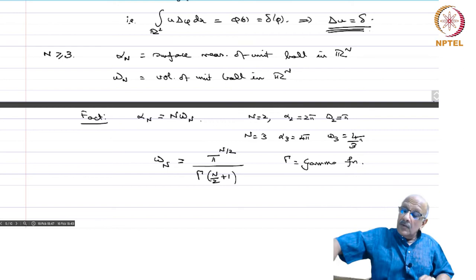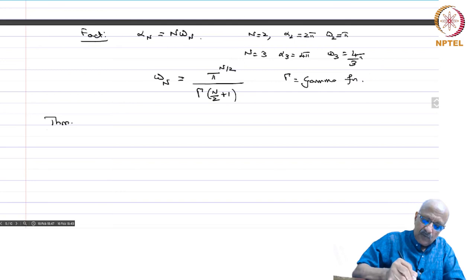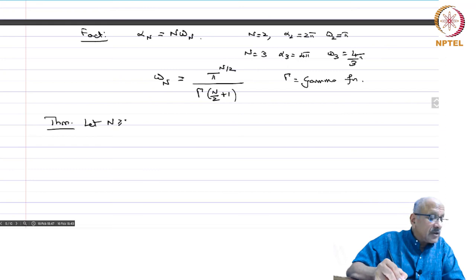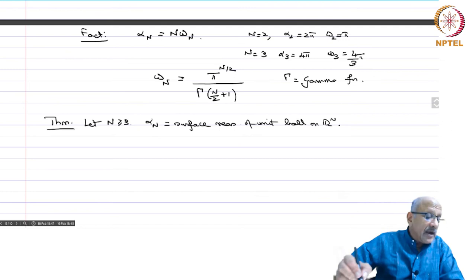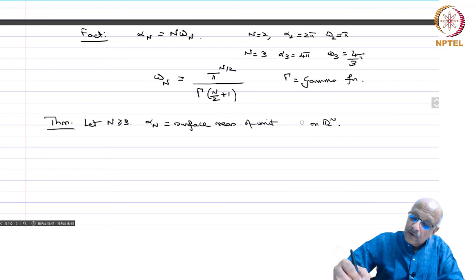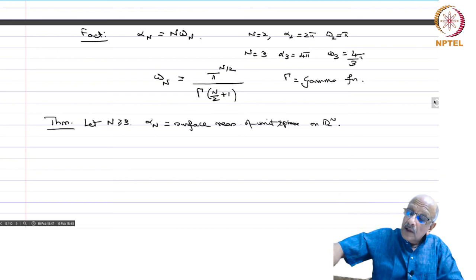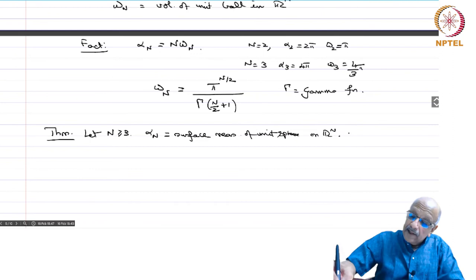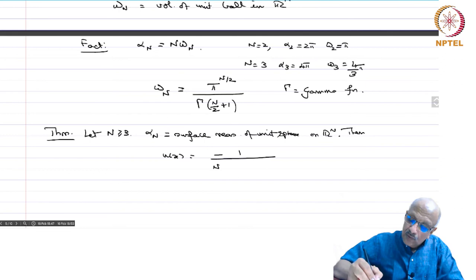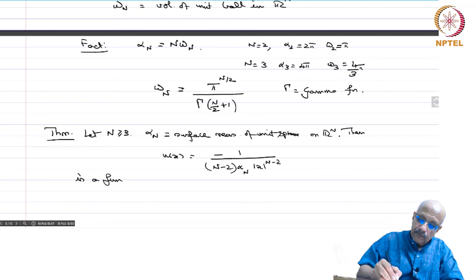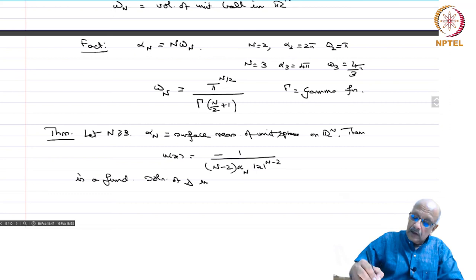Now we state the theorem for n ≥ 3. Let n ≥ 3 and α_n be the surface measure of the unit sphere in ℝⁿ. Then u(x) = −1/((n−2)·α_n·|x|^{n−2}) is a fundamental solution of the Laplacian Δ in ℝⁿ.